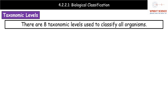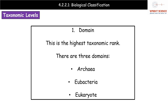The first thing we need to know about when it comes to classifying are the taxonomic levels. There are eight taxonomic levels that we need to know in order to classify all organisms. The first comes from the work of a guy called Woese, who came up with this domain model, and there are three domains that exist.